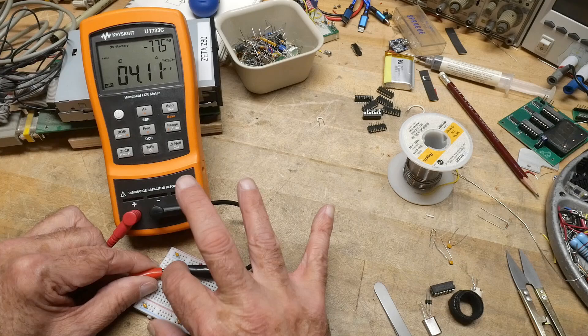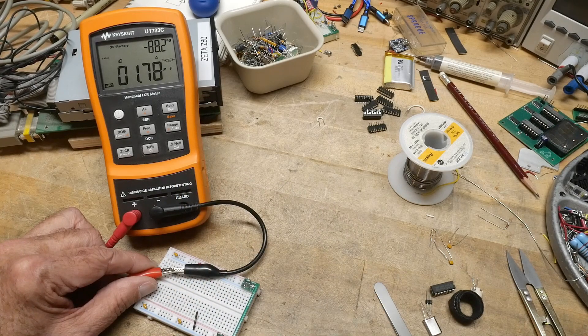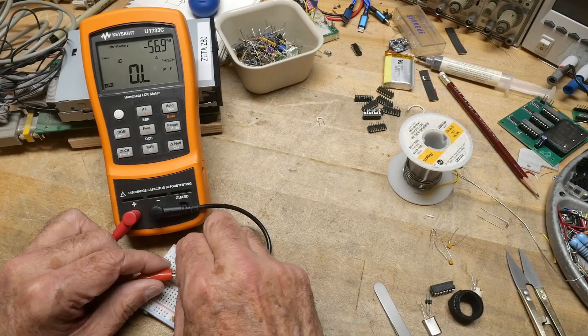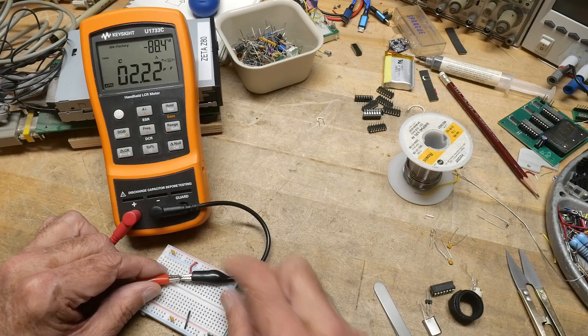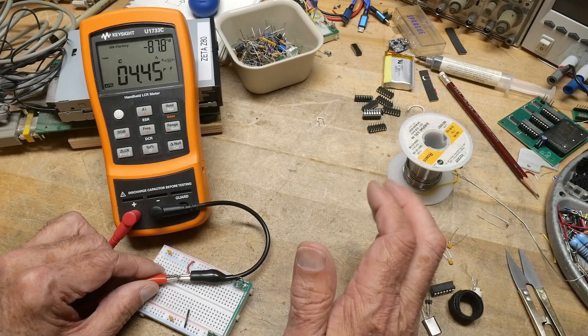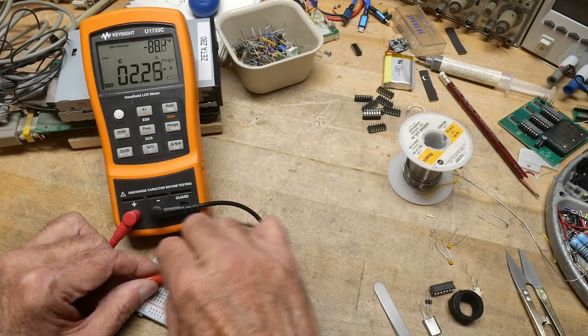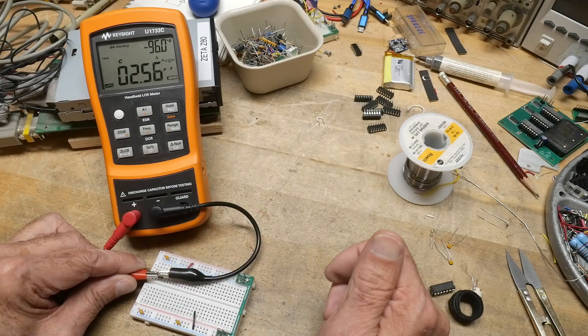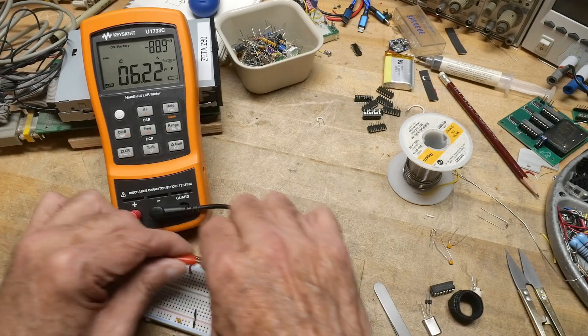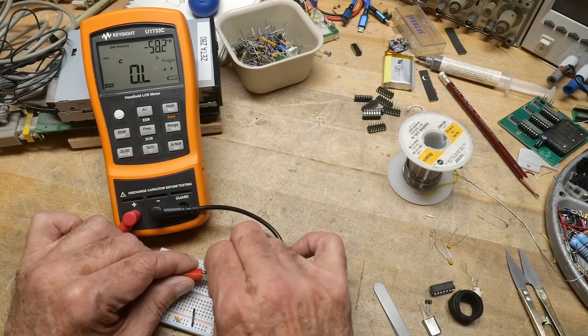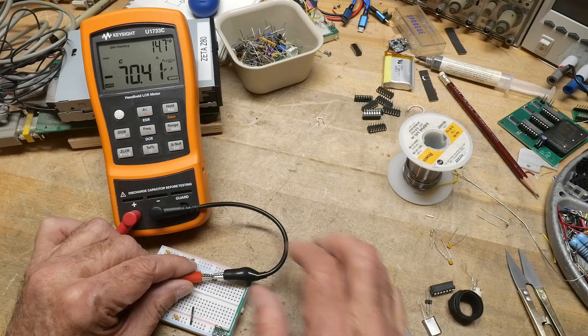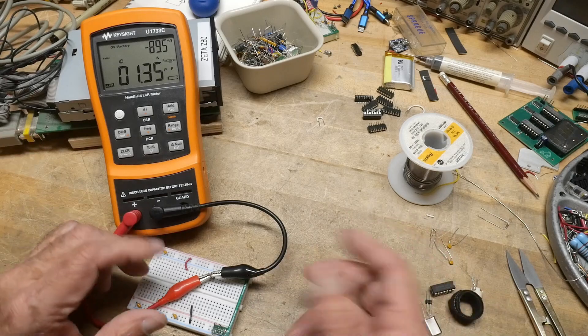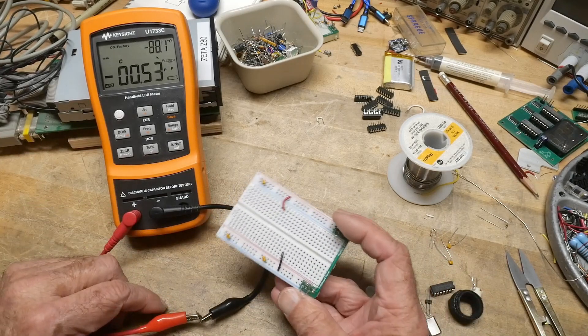Now I'm going to push it into the protoboard and we have 1.78 picofarads. So let's go someplace else on the protoboard. We've got over here 2.2. Let's go over here 1.7. Let's go over here. Part of this is just a measurement technique here, 1.5. So you can see somewhere between 1.5 and 2 picofarads of stray capacitance on the protoboard.